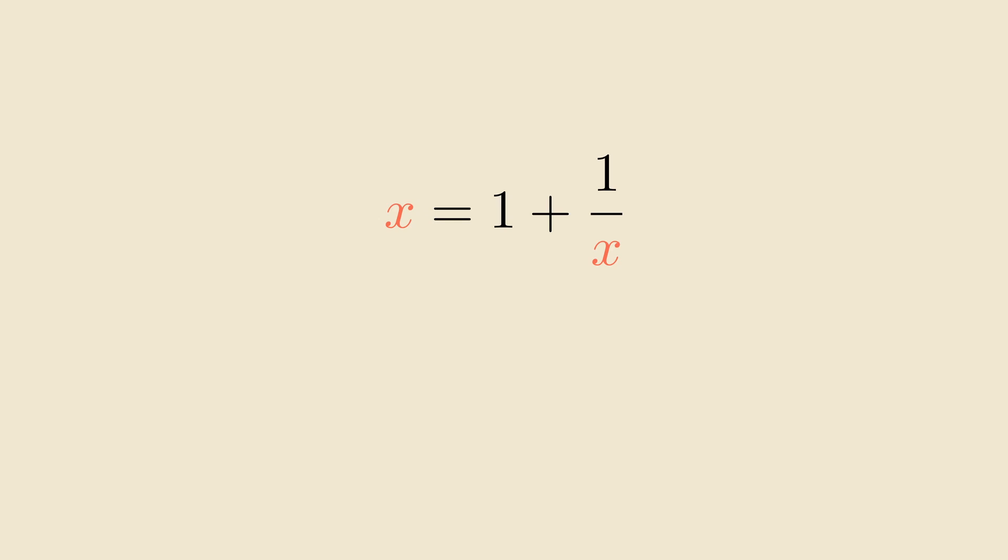Now, if we multiply both sides by x, and then move everything over to the same side, we get a familiar looking polynomial that has a root of the golden ratio. So, we know that the golden ratio is equal to this infinite continued fraction.